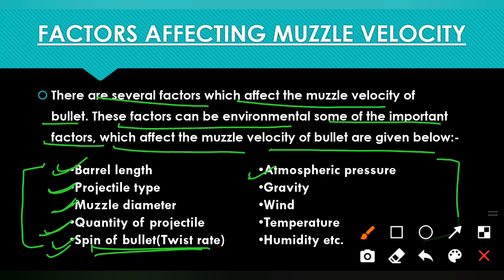Next is atmospheric pressure. Simply put, if the pressure is very high, the air resistance on the bullet will also be very high, which can slow down the muzzle velocity. Conversely, if the atmospheric pressure is low, the air resistance on the bullet will not be as great, and in that case muzzle velocity can comparatively increase. So atmospheric pressure is also an important factor affecting muzzle velocity.